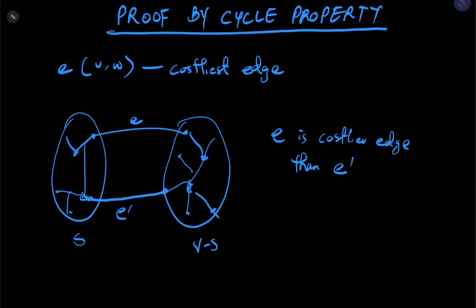So we can say that if E is a costlier edge than E prime, and we are looking for a minimum spanning tree, we would have to remove E. And when we remove E, we will still have E prime, which is a cheaper edge connecting S and V minus S.